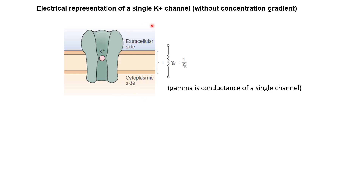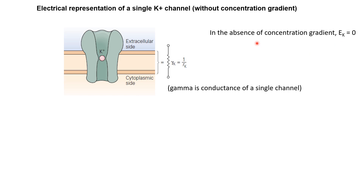We know that potassium ions are more abundant inside compared to the outside. But for simplicity, let's first consider the case where the two concentrations are equal — so there is no concentration gradient. In that case, equilibrium between electrical and concentration gradient will be reached if the electrical gradient is also zero, meaning the equilibrium potential for potassium is zero. Using the Nernst equation, if inside and outside concentrations are equal, the ratio is 1 and log of that is zero, so Ek = 0. This means if the membrane potential is zero, there will be no current through this channel.